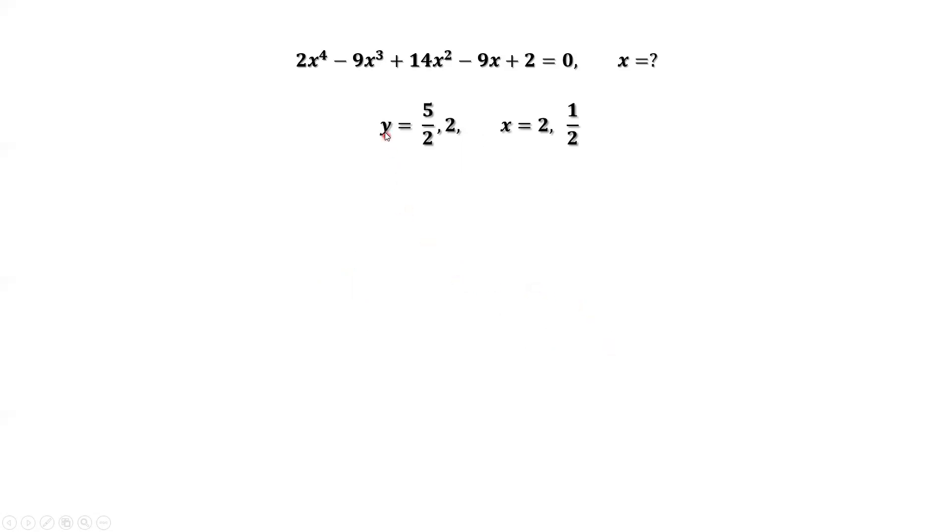Now we consider y equals 2, the second situation. This means x plus 1 over x equals 2. Both sides times x: we have x squared plus 1 equals 2x. Move 2x to the left-hand side. The left-hand side is a perfect square: x minus 1 squared equals 0. Therefore, x equals 1. Here, actually, we have two solutions: x equals 1, x equals 1, two identical solutions.